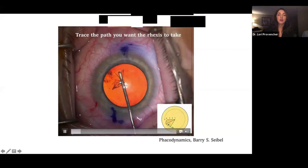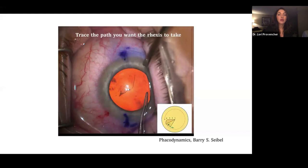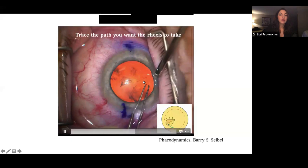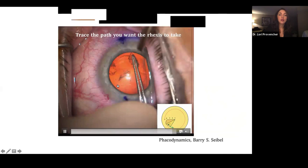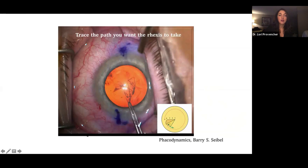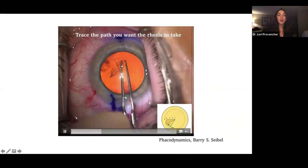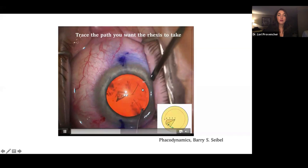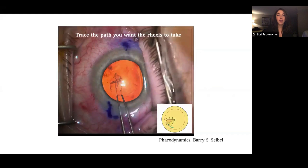I'm setting the length of the rexis with the cystotome here. And then I'm going back in. And as the flap is folded over, I'm actually focusing at the tip of my utrata more than I am at the area of the tear. I'm not looking so much here. I'm actually watching where this is going because I'm tracing the path that I want the rexis to take. And this works really well if you have a stable chamber and the flap is folded over properly.